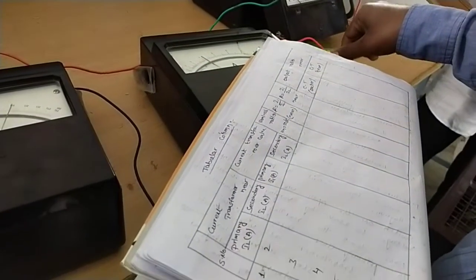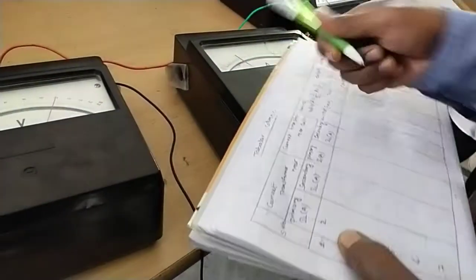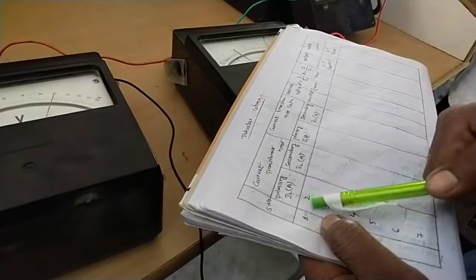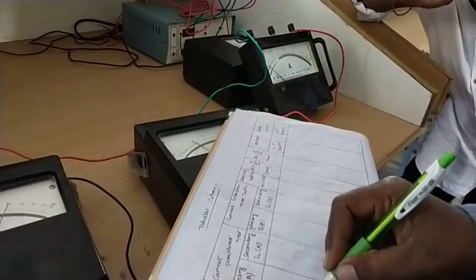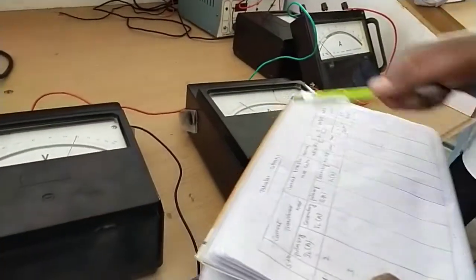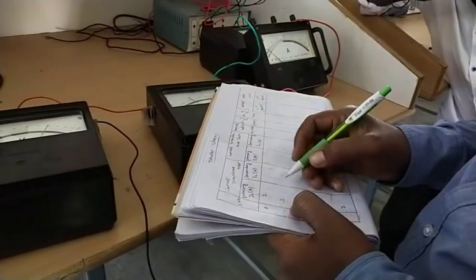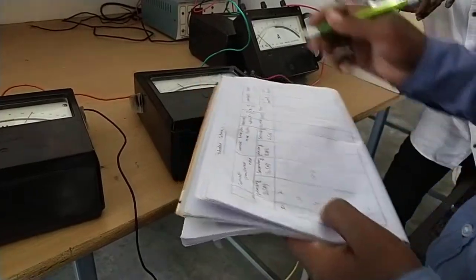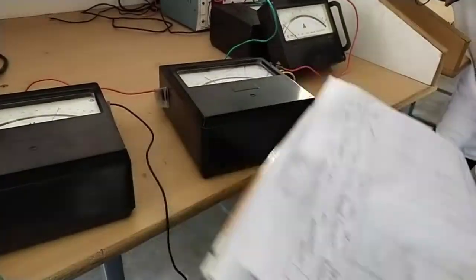For a primary current of 4 amps, first we set 2 amps. For 2 amps primary current, the secondary current is 0.1 amps. Now increasing to 4 amps primary, the secondary shows 0.2 amps. Now we increase the load further and take primary and secondary current readings again. The primary is now showing nearly 6 amps.